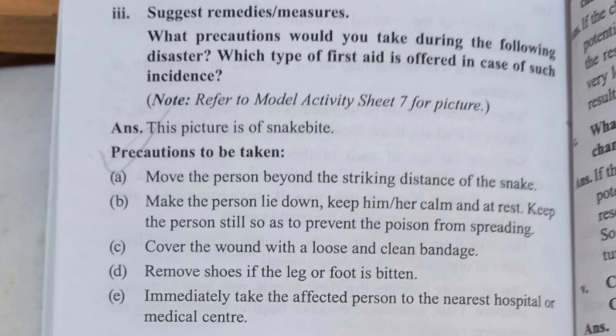What precautions should be taken if a person is bitten by a snake? Move the person beyond the striking distance of the snake. Keep the person laid down, calm, and at rest. Keep the person still to prevent the poison from spreading. Cover the wound with a loose and clean bandage. Remove shoes if the leg or foot is bitten. Immediately take the affected person to the nearest hospital or medical center.